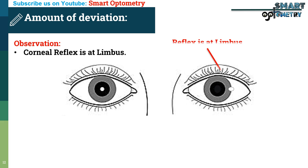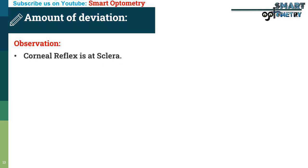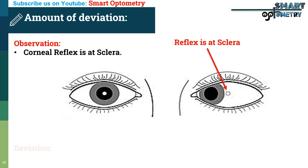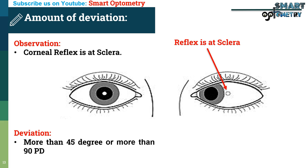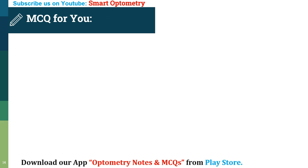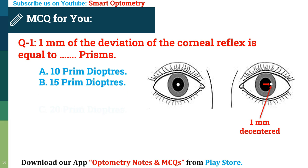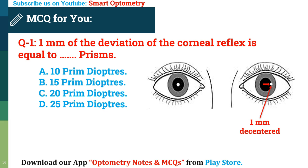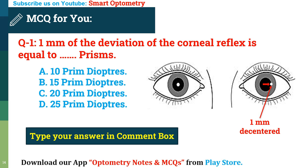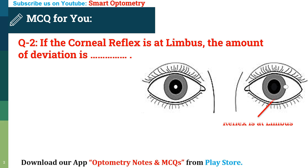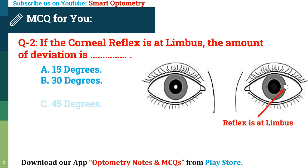If the reflex is at the limbus, rough estimation of deviation is 45 degrees or 90 prism diopters. If the reflex is at the sclera, deviation is more than 45 degrees or 90 prism diopters.